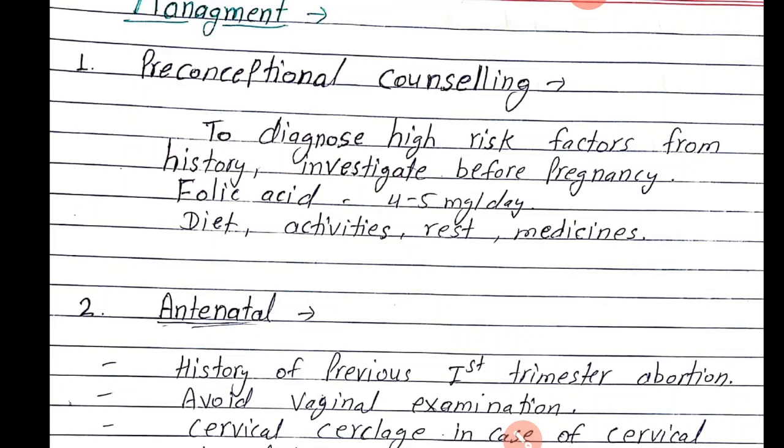Agar pehle ki uski koi maternal medical condition hai jaise diabetes, epilepsy, hypertension to usko bhi under control karenge. Then folic acid start karenge — 4-5 mg. Yeh pre-conceptional stage mein start ki jaati hai aur pregnancy ke 12 weeks tak rakhi jaati hai.